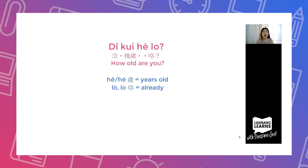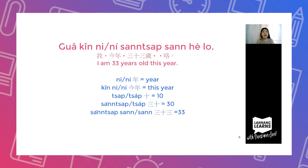Next, to ask how old someone is, we say the question shown — meaning "How old are you?" The word for years old means years old, and the word for already means already. In my case, I would say that I'm 33 years old this year, so I say the corresponding phrase.